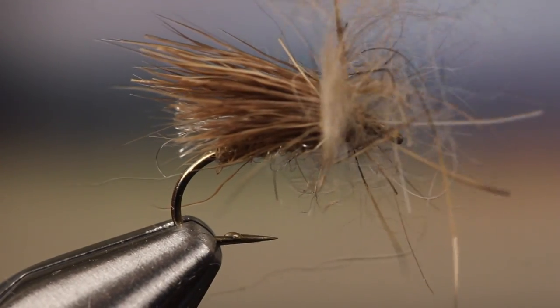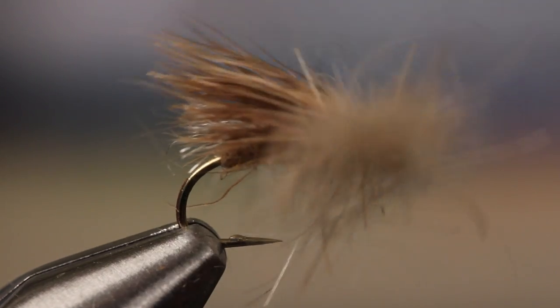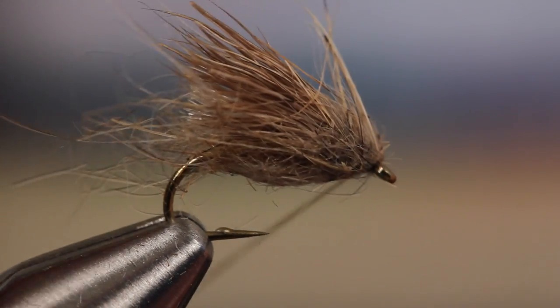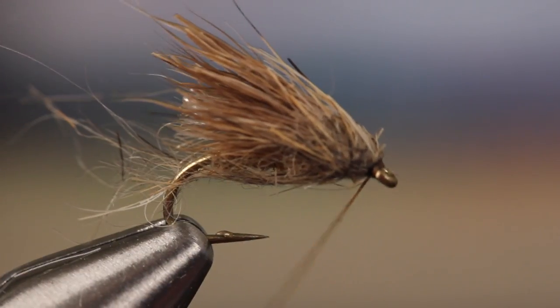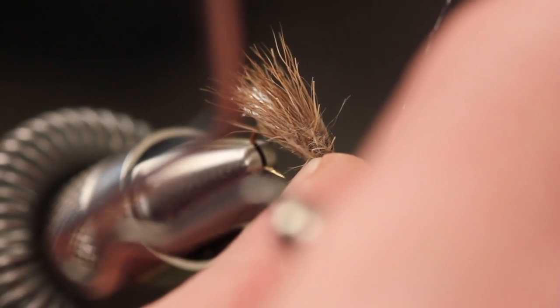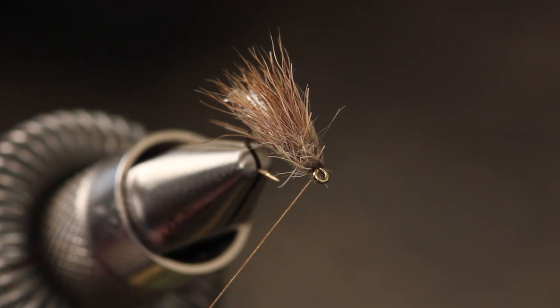Begin taking wraps in front of the wing. Occasionally pull the fibers rearward and continue wrapping. This raggedy looking mass will trap air bubbles, adding to the fly's realism and helping it to float.